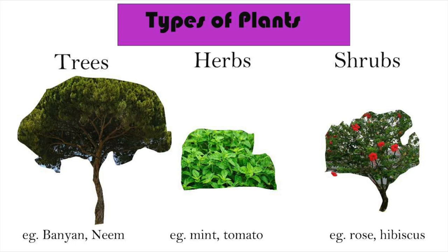There are three main types of plants: trees, herbs and shrubs. Trees are large plants with a thick woody stem. Examples are banyan and neem tree.